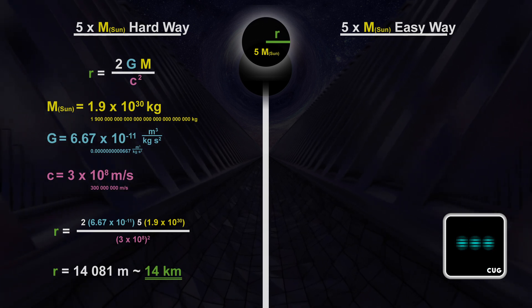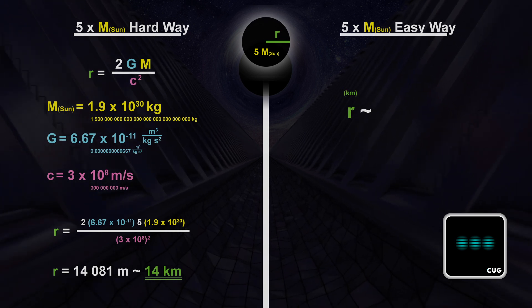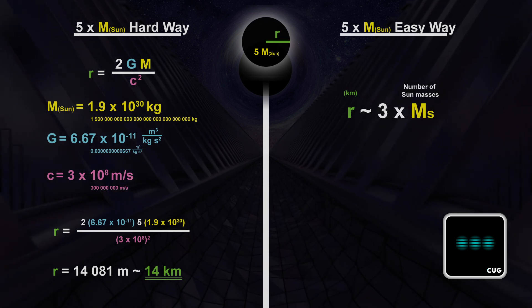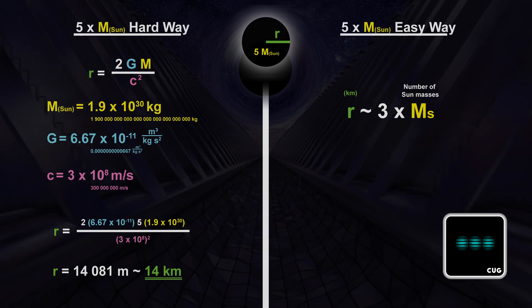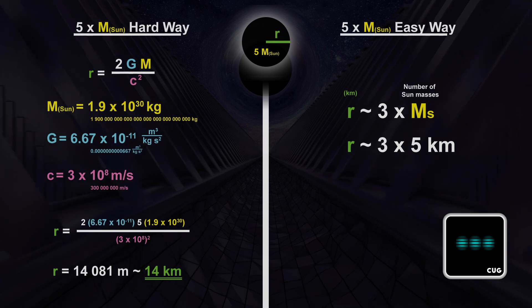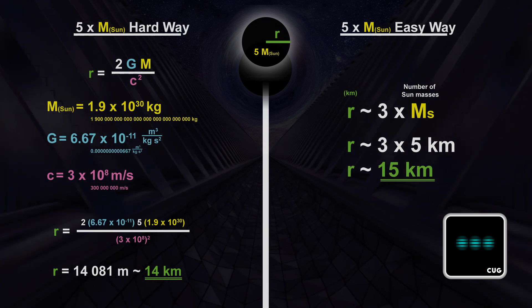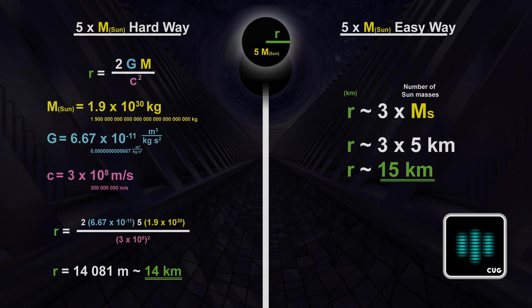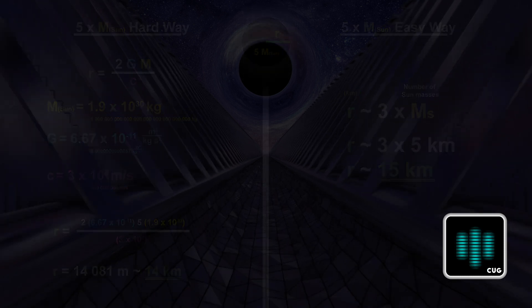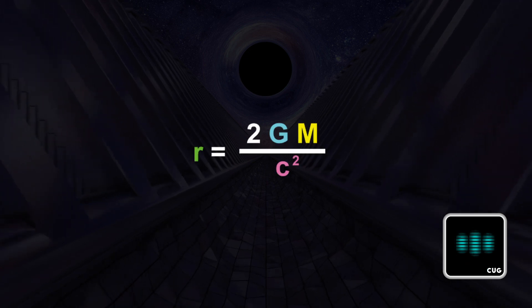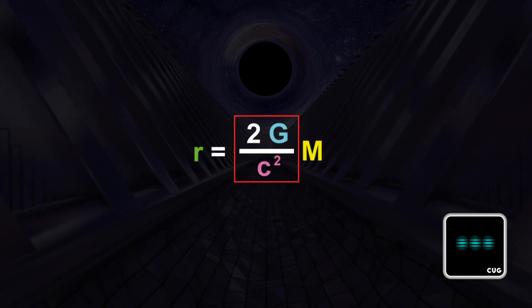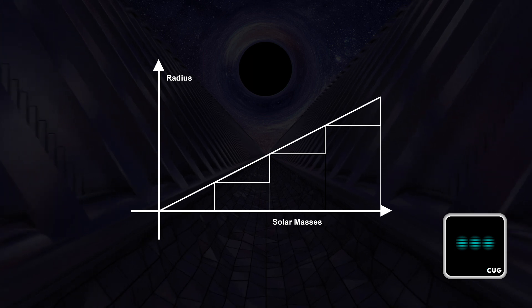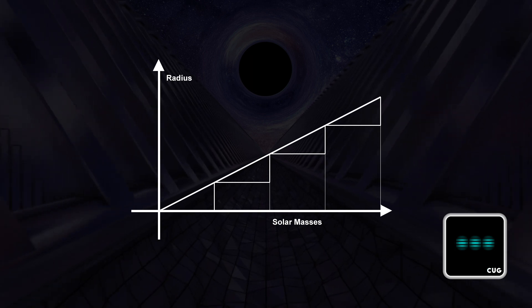That seems very simple to me. It becomes way simpler with the easy way. To estimate the radius all you must do is multiply the number of solar masses by 3. And you get the radius in kilometers. That's it. With 5 solar masses that would be about 15 kilometers. Close enough. A black hole with 1000 solar masses would then have a radius of 3000 kilometers. I am sure all your viewers can multiply by 3. And I understand why this is the case. In the original formula this part here is a constant. Exactly. That means black holes grow in a linear way. For each additional solar mass the radius increases by a fixed amount.